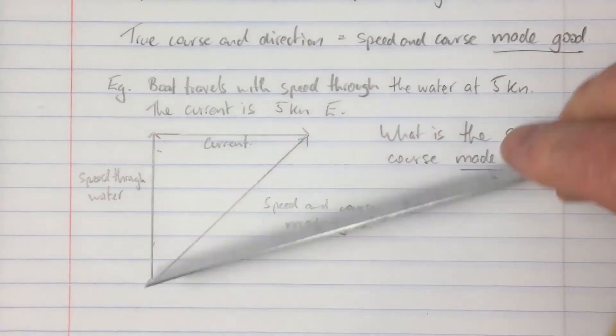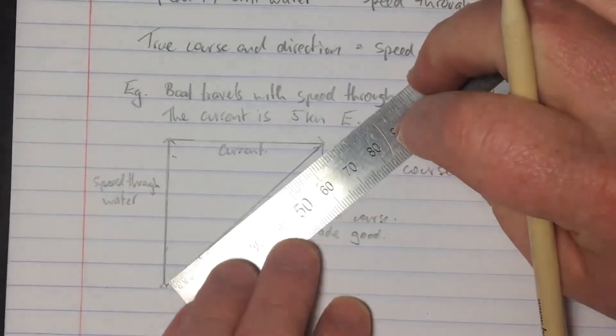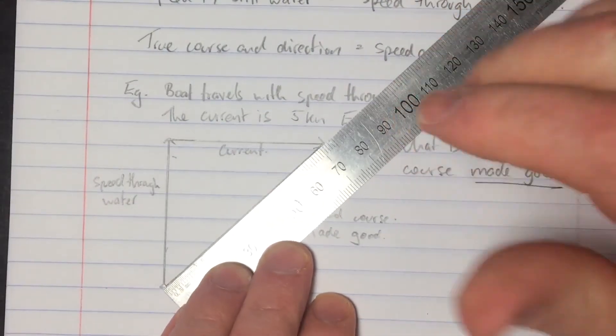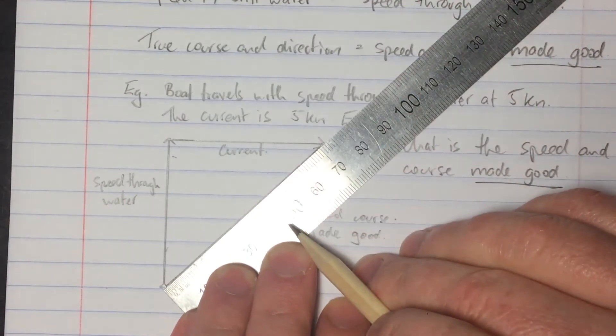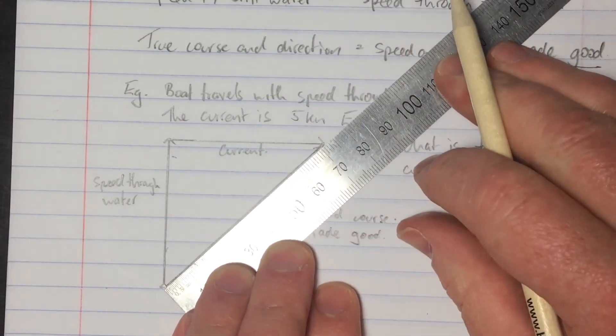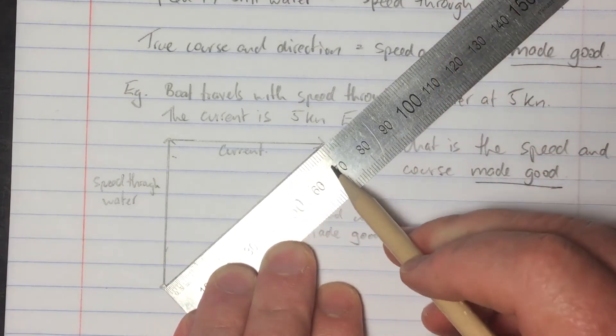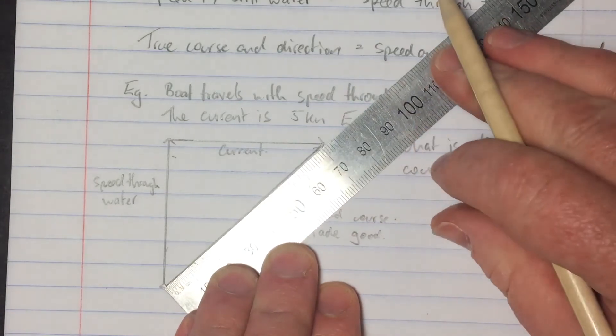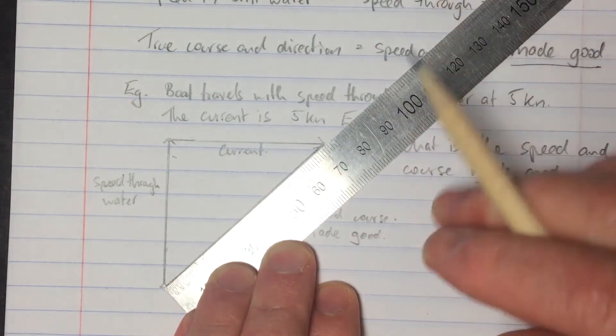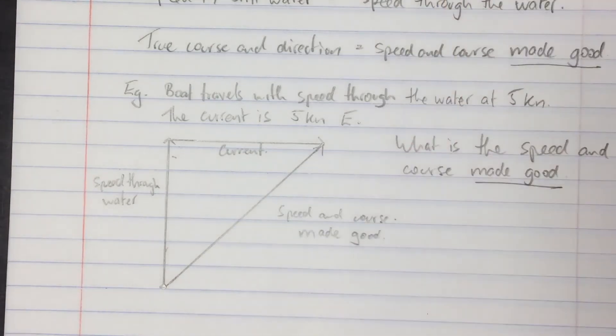So what we do to work out what the speed made good is, we use our ruler and we measure the length of the line. Now each centimeter represents one knot, so this line is 72 millimeters, let's say it's 7.1 centimeters, so that represents a speed of 7.1 knots.